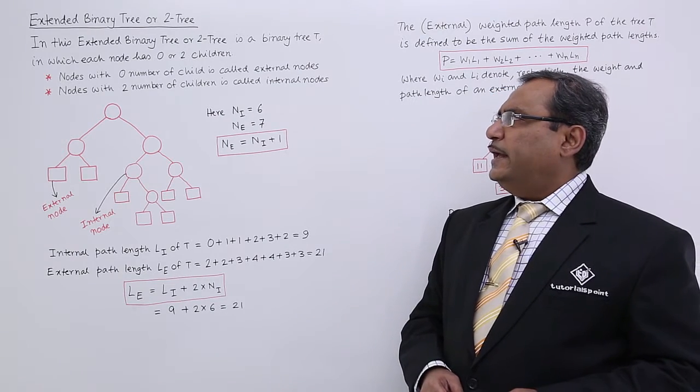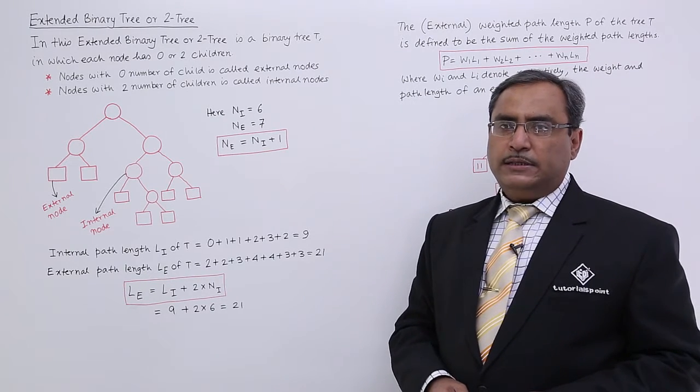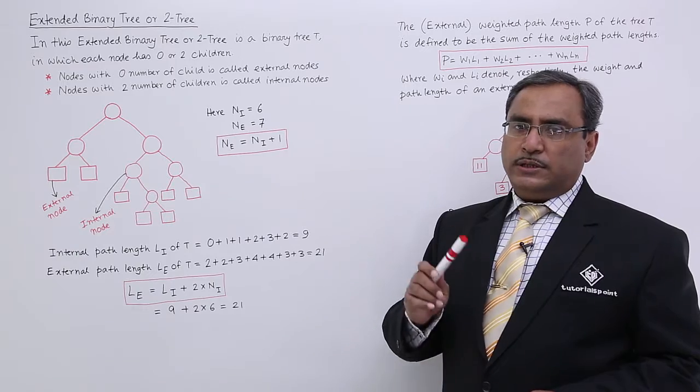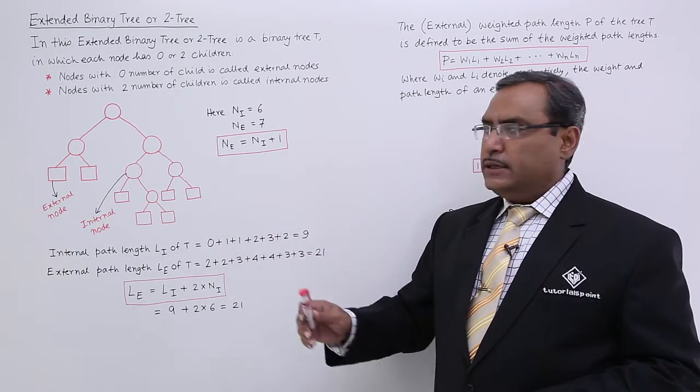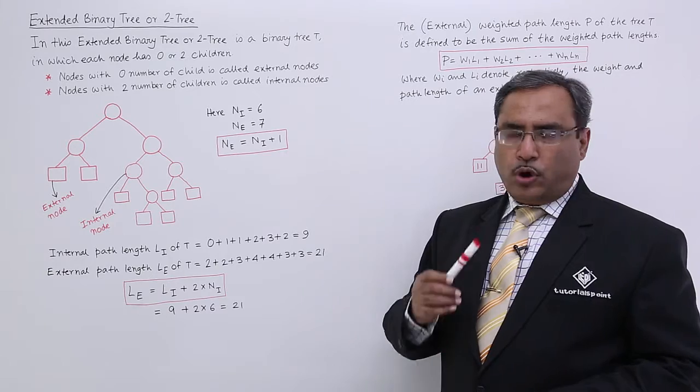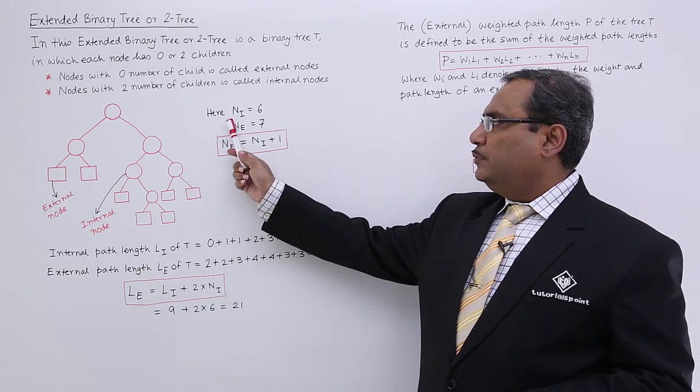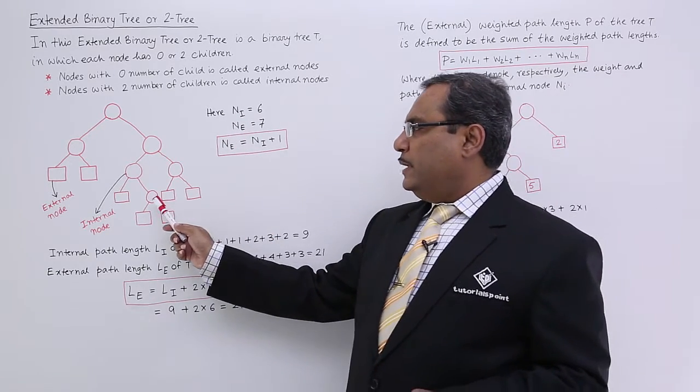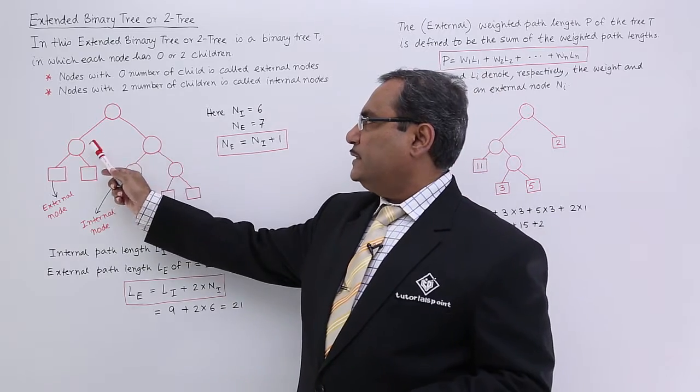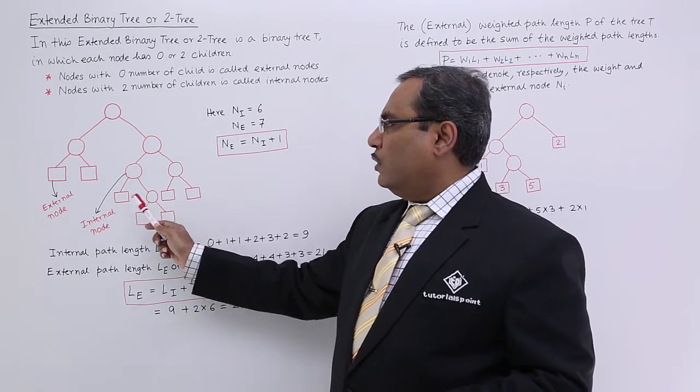And in this extended binary tree, we are having some equations, some properties, some features. Let me go for the count of the internal nodes. We are having 1, 2, 3, 4, 5, 6 internal nodes.